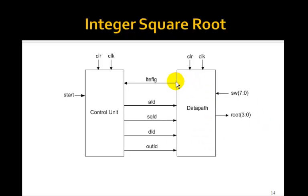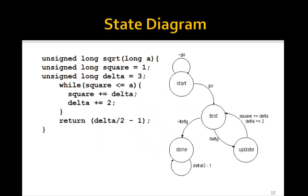The output is the less than or equal flag, and it's going to get its load signals from the control unit. So here's the state diagram for the control unit, and we'll stop in the start state of an input go. So when go goes to 1, we'll go to the test state, and then we go to the update state to update the square is square plus delta, and delta is delta plus 2, and then we go to the done state.